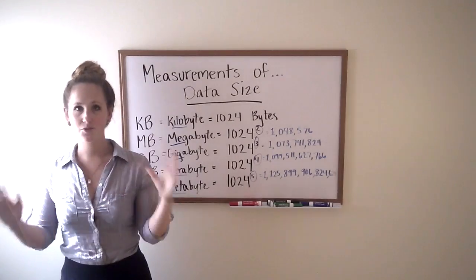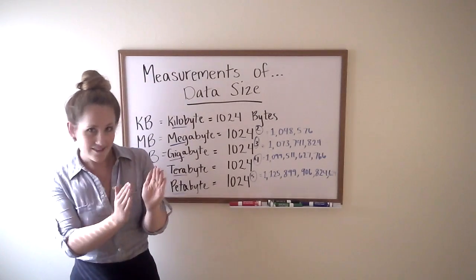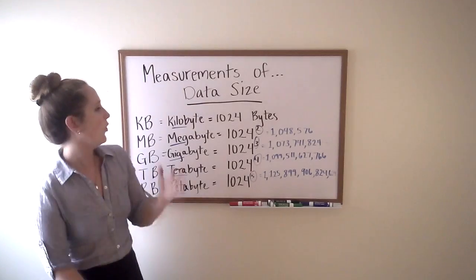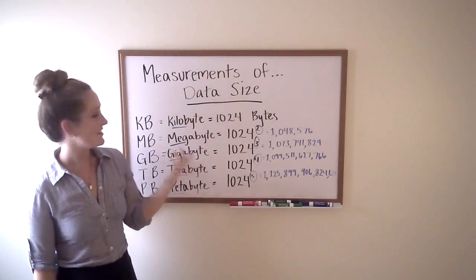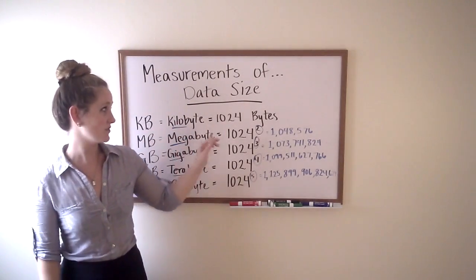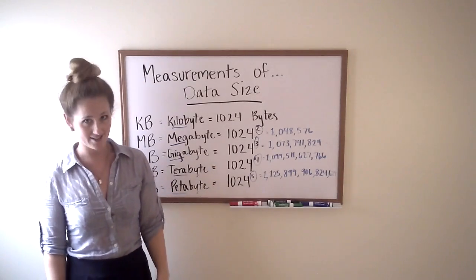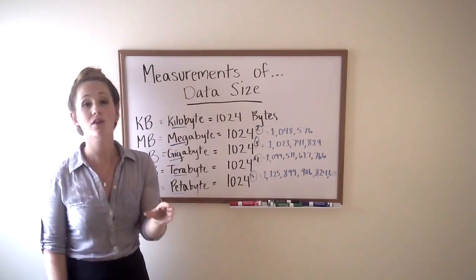After we get past the small bit and the byte, which is eight bits, we get bigger really fast. The next step up is a kilobyte, which is 1024 bytes, which times eight is a whole lot more bits.